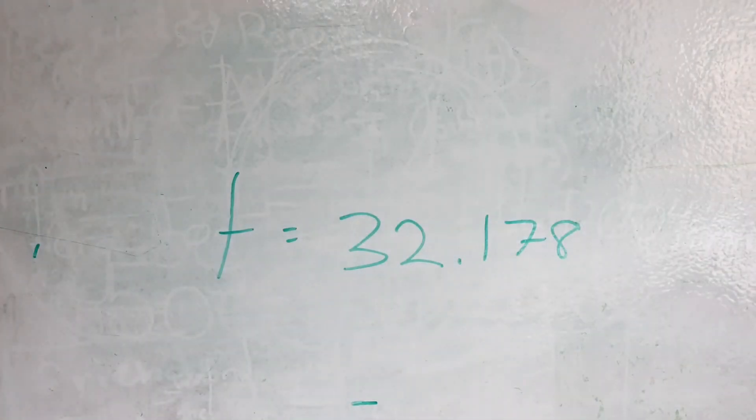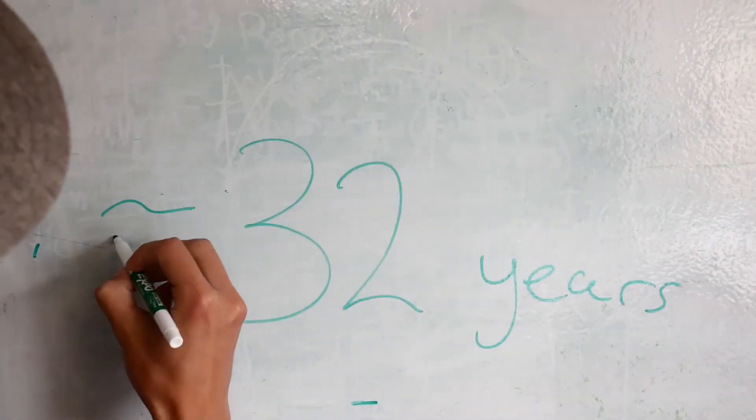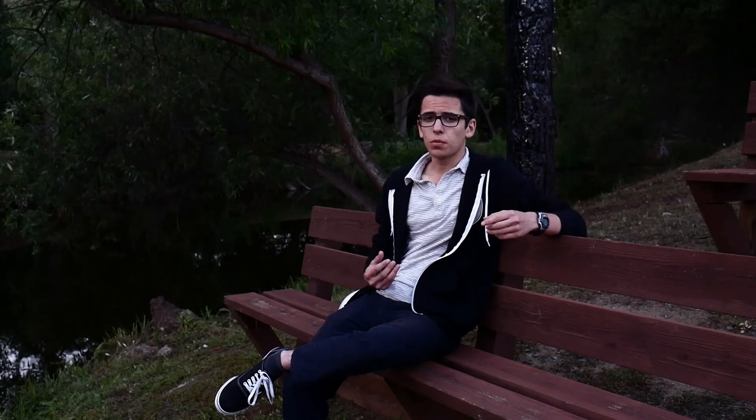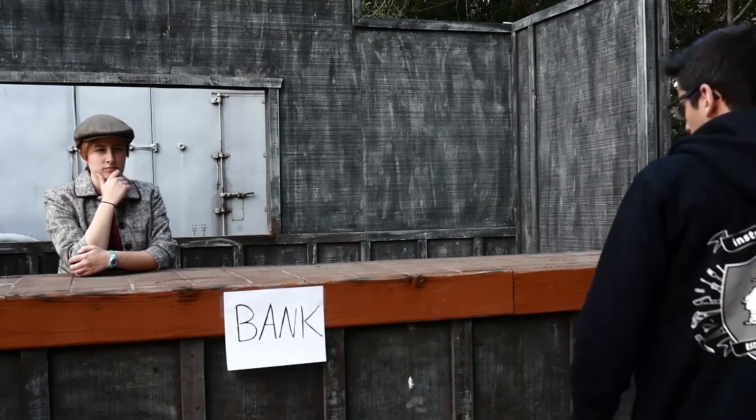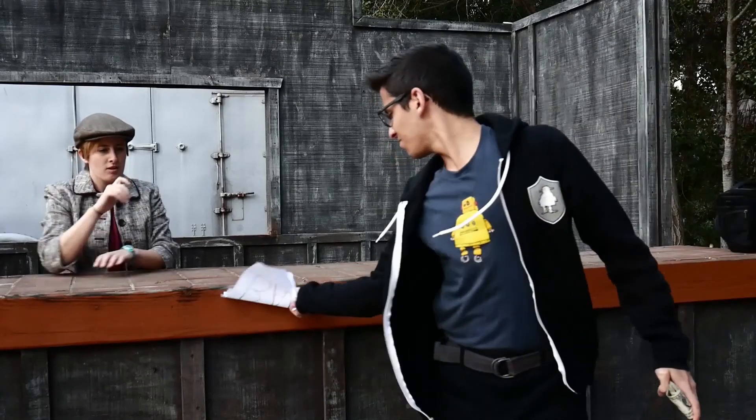And we see that t equals 32.178. Now we know how logarithms work and how we can use them in a real-life situation such as compound interest. Remember, logarithms are very helpful when we're trying to solve for a variable exponent because it brings the exponent down to a coefficient which can easily be solved. More importantly, now you know you can't really make a fortune by just depositing money in your bank.